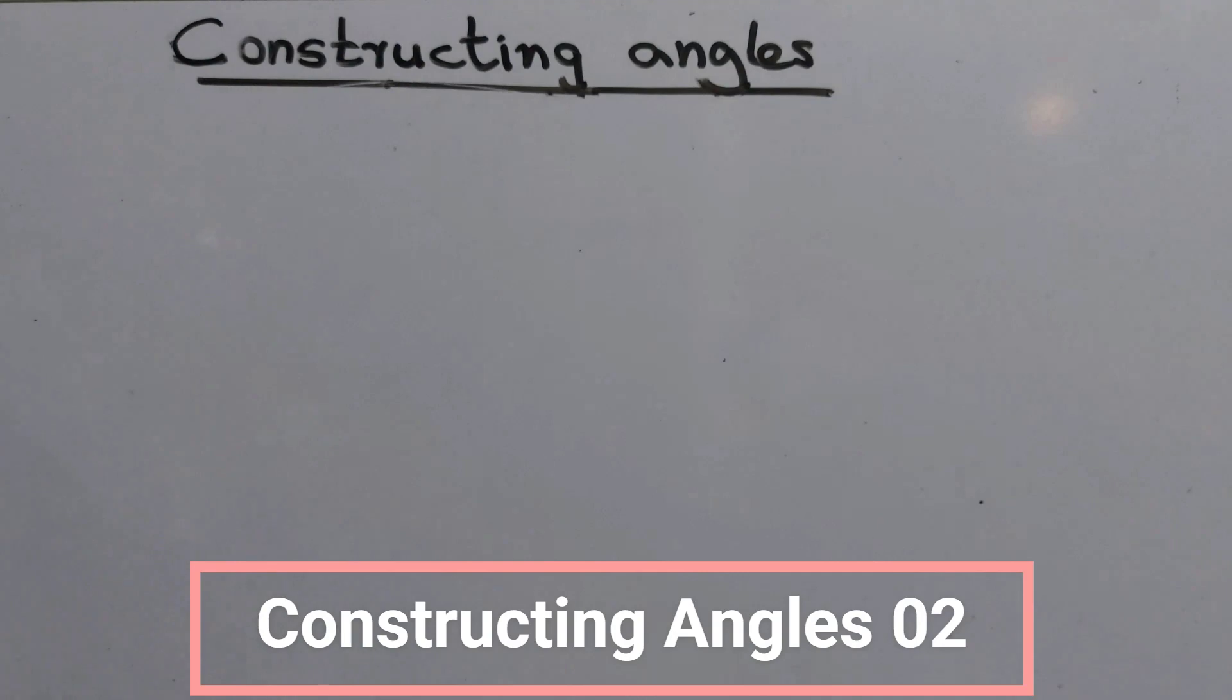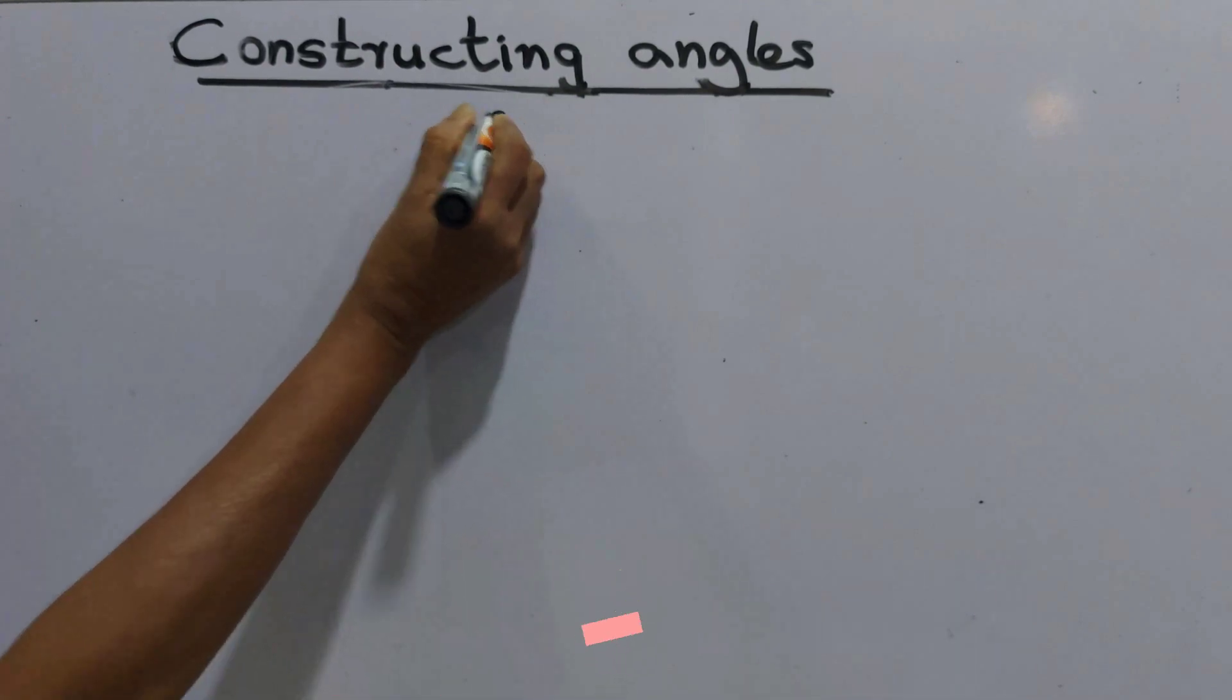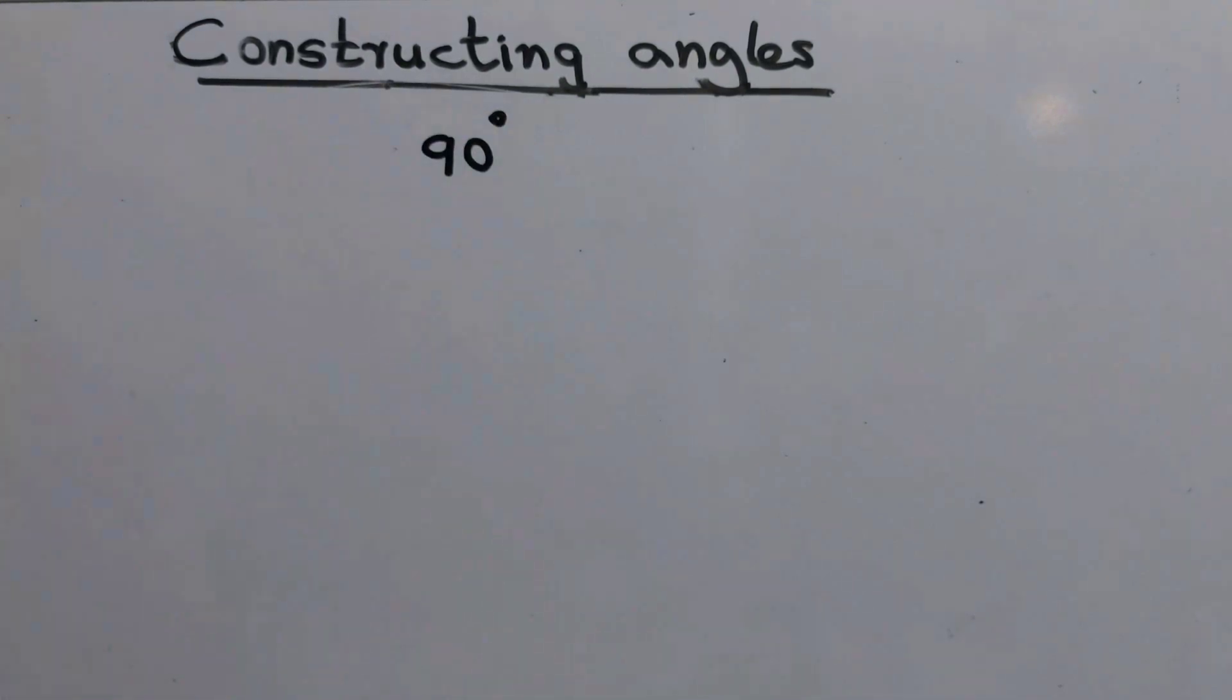We are going to demonstrate the construction of angles by drawing an angle of 90 degrees. The first step is to draw a line.